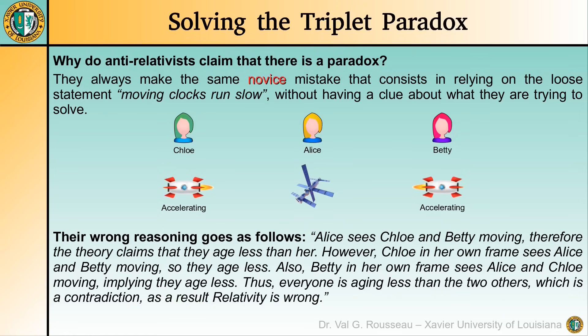The problem is that when they invoke this statement, they have no clue what they are trying to apply it to. Typically, their reasoning goes as follows: Alice sees Chloe and Betty moving, therefore the theory claims they age less than her. However, Chloe in her own frame sees Alice and Betty moving, so they age less than her. Same for Betty — she concludes that her two sisters age less than her. In the end, everyone is aging less than the others, which is a contradiction, and thus relativity is supposedly wrong.